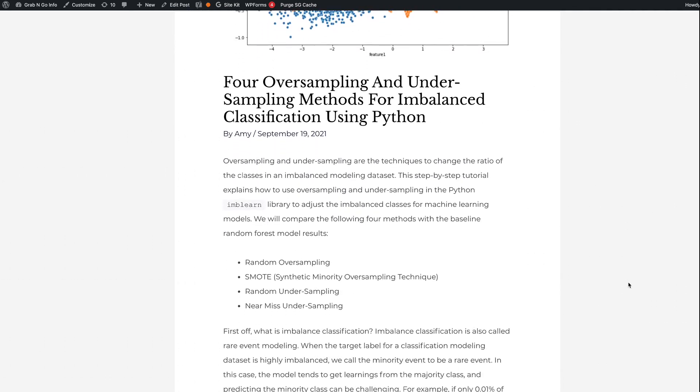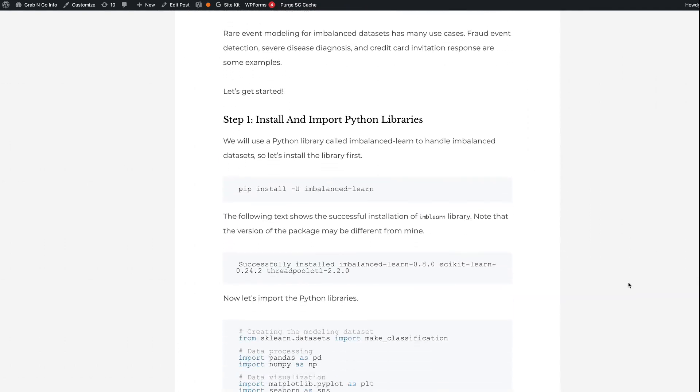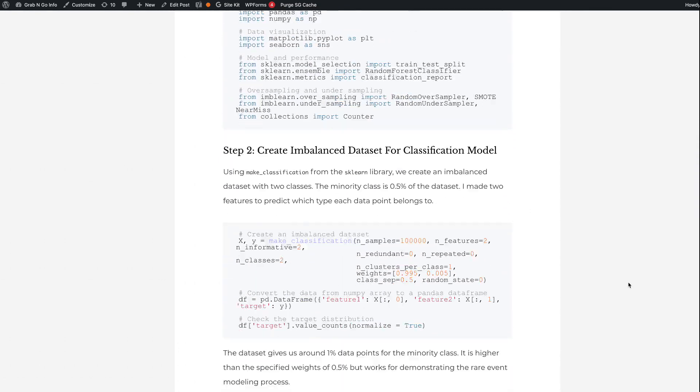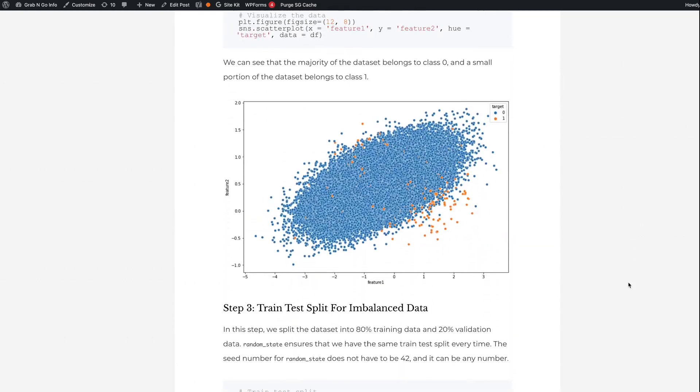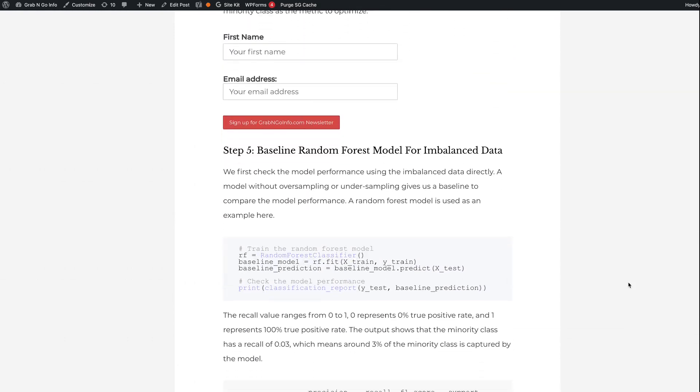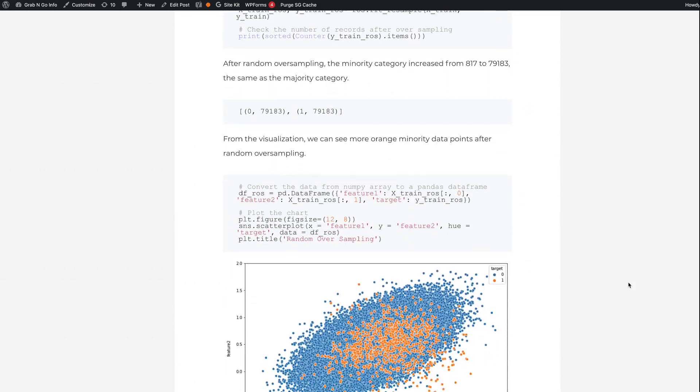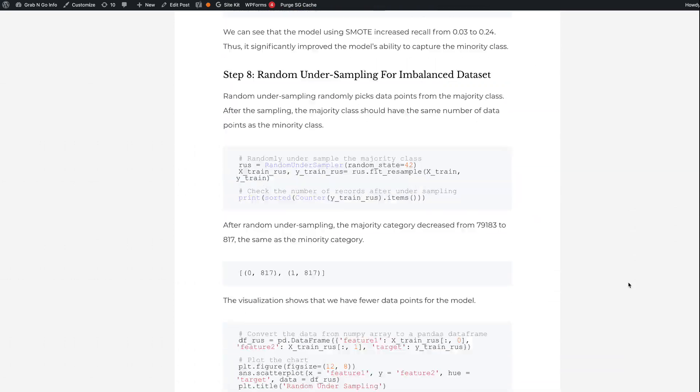This is the blog post for this video. It has all the code and explanations, as well as related article recommendations, such as balanced weight adjustment, isolation forest for anomaly detection, and use neural network model for imbalanced classification.